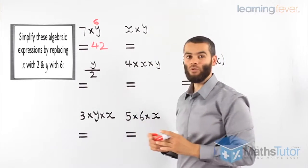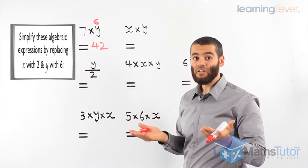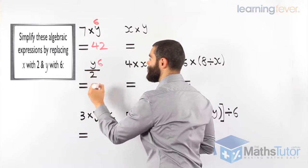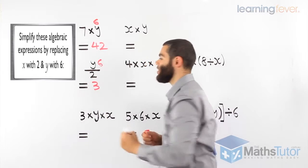Y divided by 2. We know y is 6. So, it is actually 6 divided by 2. 3.